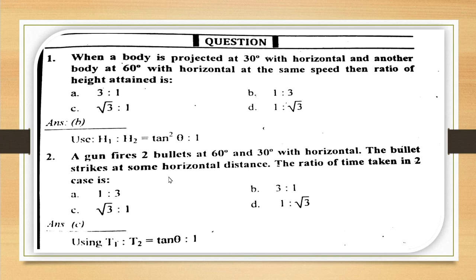Another question: a gun fires 2 bullets at 60 degrees and 30 degrees with the horizontal. 60 degrees and 90 minus 60 is 30 — the bullets strike the same horizontal distance. The ratio of time taken: tan(60°) = √3 and tan(30°) = 1/√3, so the ratio is √3 : 1.